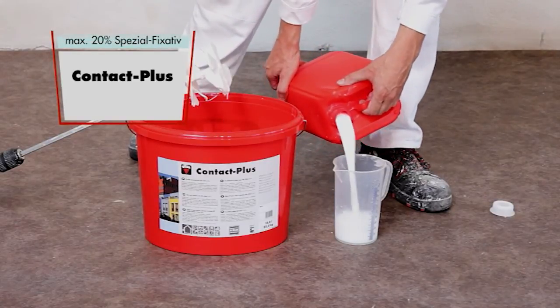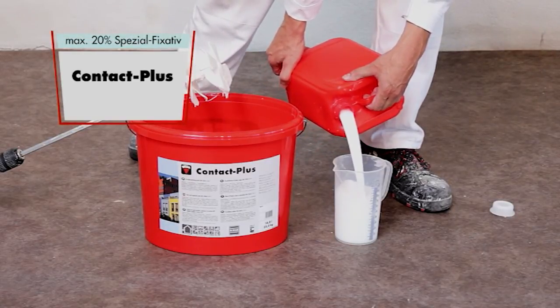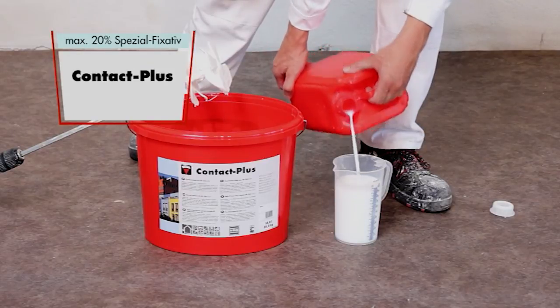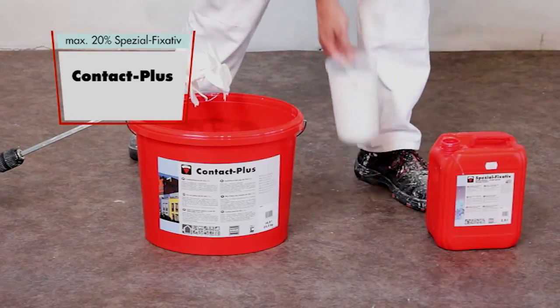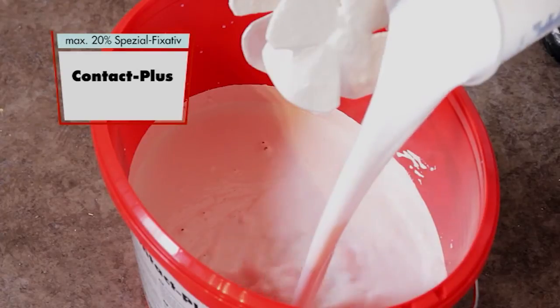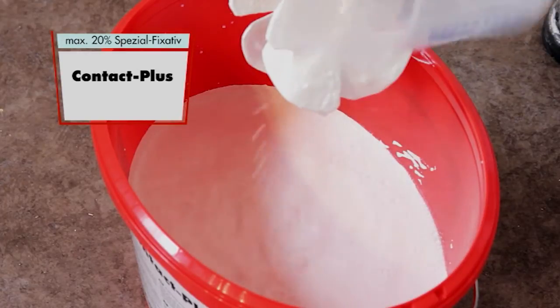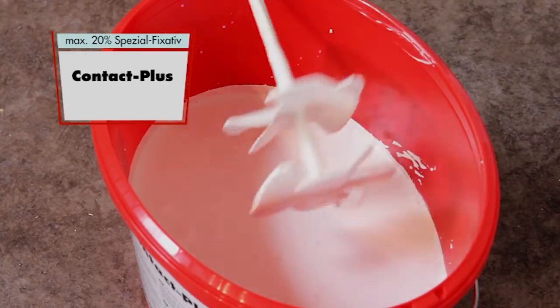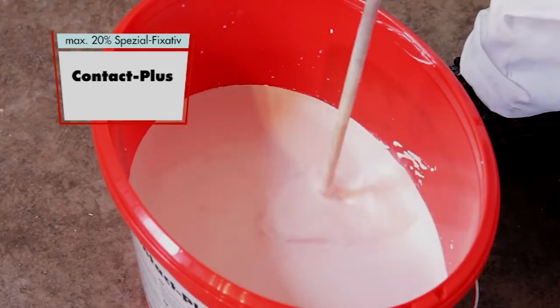Before application, the material should be stirred and blended thoroughly, then diluted using Kyme Special Dilution. The dilution rate depends on the absorbency of the substrate. Dilution ratios can range from 5% up to a maximum of 20%.